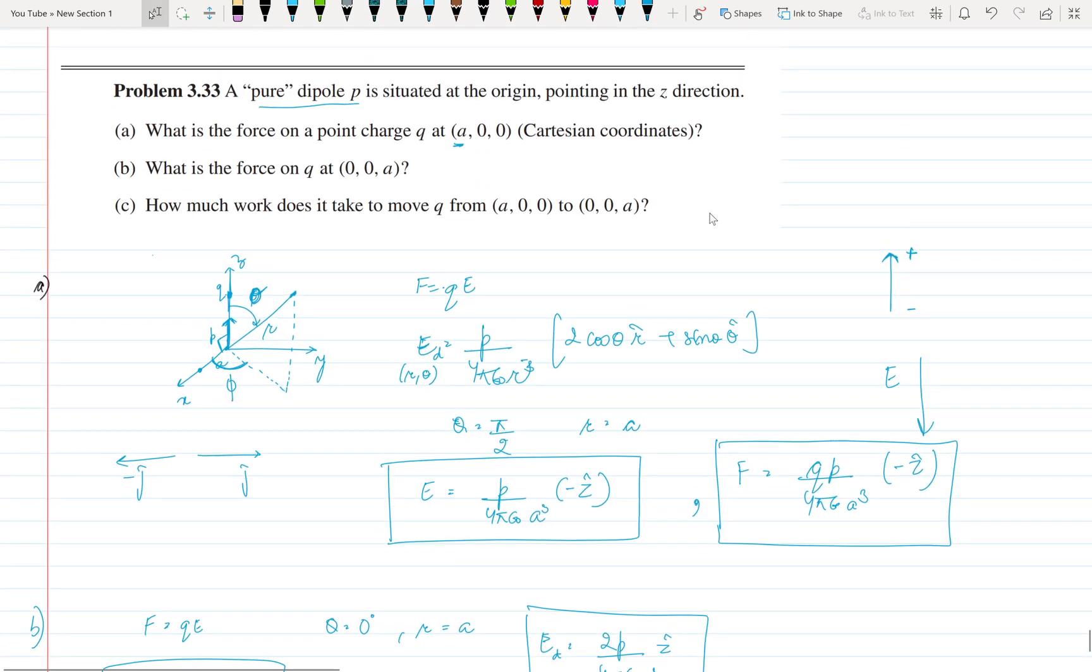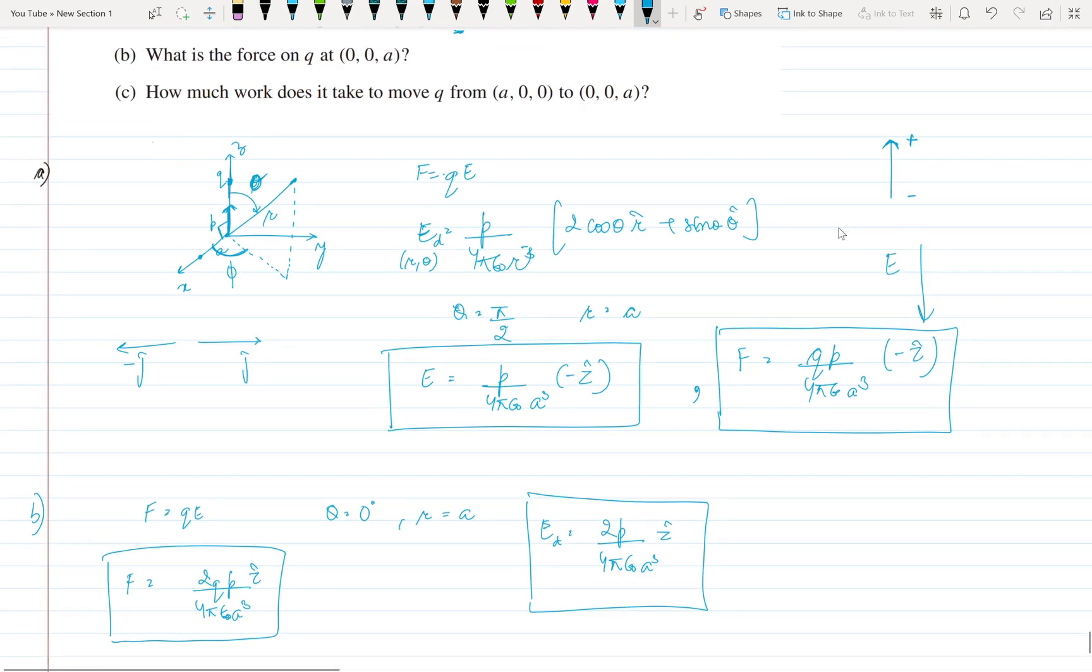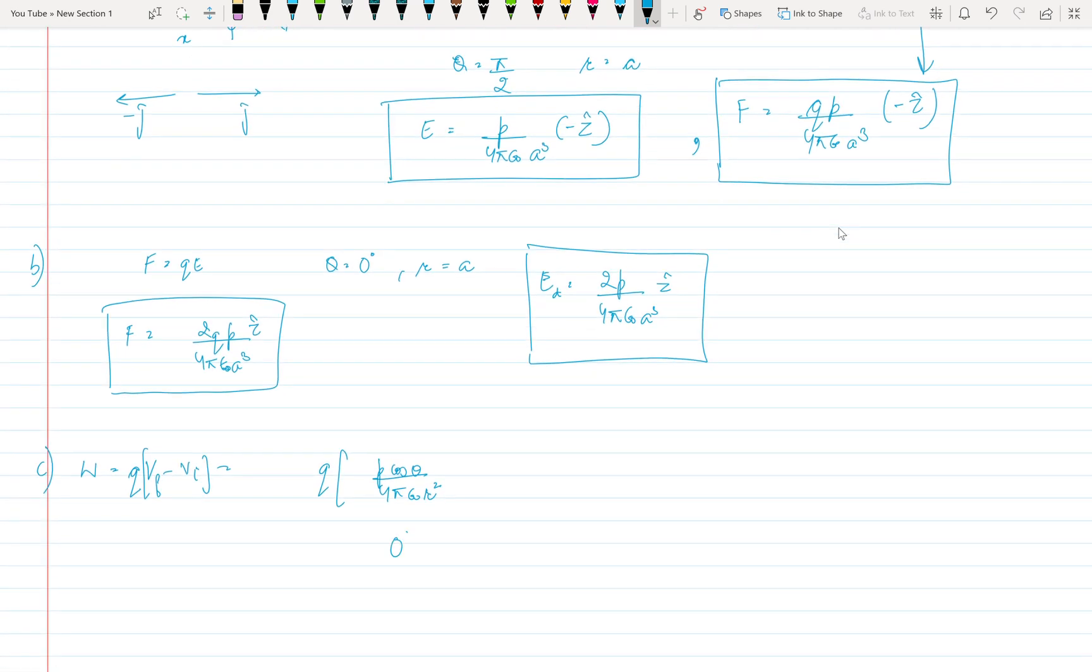So for a point which is at a, we need to replace r by a square. Final position is a at 0 degree, final position is 0 degree and initial position is pi by 2.